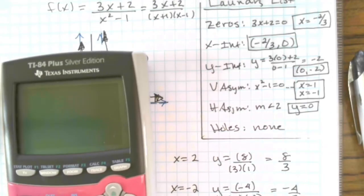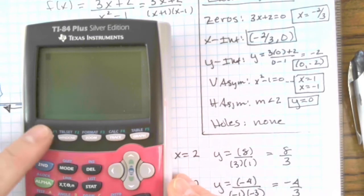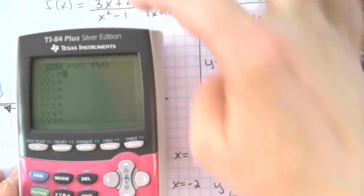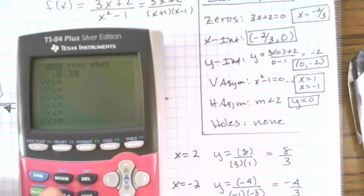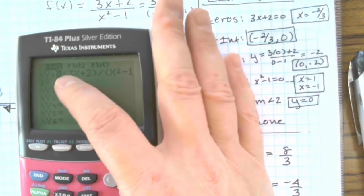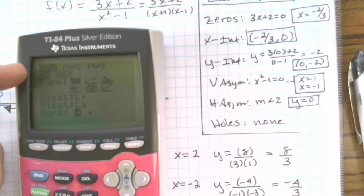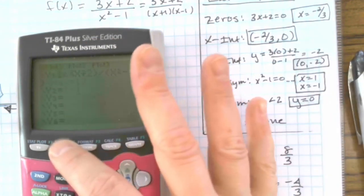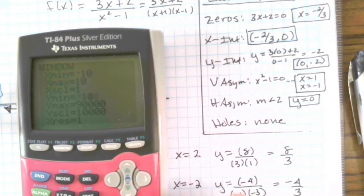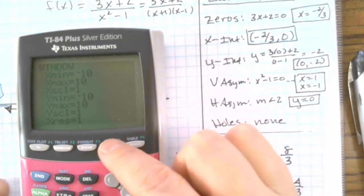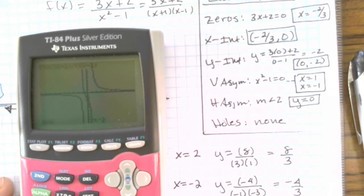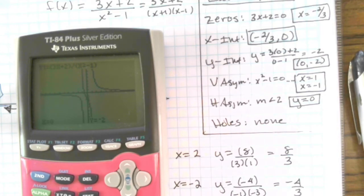Depending on the type of grapher you have, you can input in factored form or regular form. Enter y equals parentheses 3x plus 2 close parentheses divided by parentheses x squared minus 1 close parentheses. Make sure stat plot 1 is turned off or it will mess with your graph. Set your window to negative 10 to 10 on both axes going by 1s as a good starting point. Trace it out and see what you've got. Danger: if your graph has graph holes, your grapher will not show them — your grapher will lie to you. That's why you have to find graph holes algebraically.